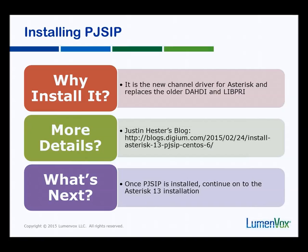After PJSIP, the next thing we do is install Asterisk 13. But for the remainder of this video, I'm going to be installing PJSIP, so let's move ahead with that. We have a terminal open, and this is a brand new instance — CentOS 6 64-bit — installed as a VMware ESXi instance in our data center.